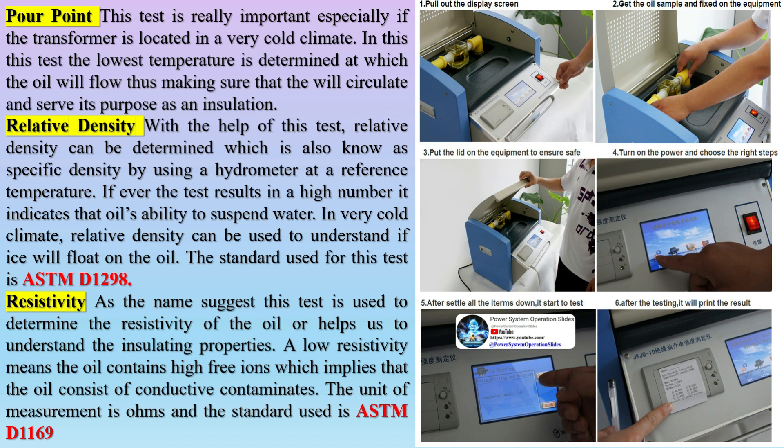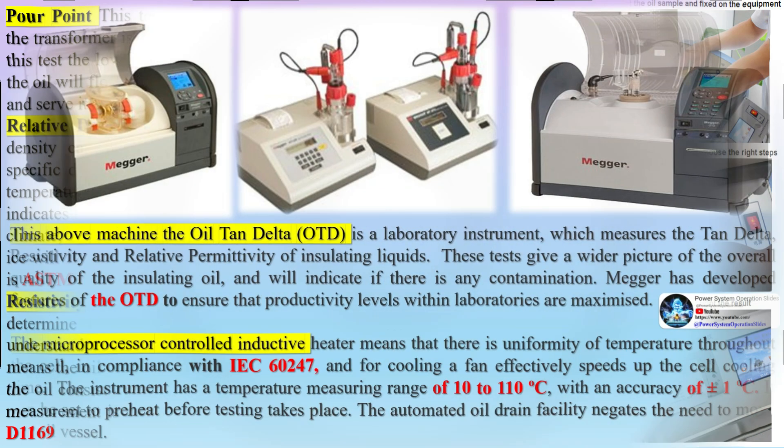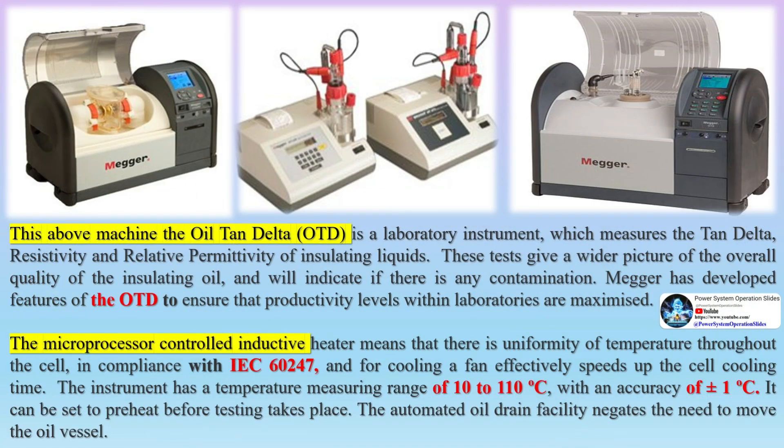Resistivity: this test is used to determine the resistivity of the oil and helps us understand its insulating properties. A low resistivity means the oil contains high free ions, implying that the oil consists of conductive contaminants. The unit of measurement is ohms and the standard used is ASTM D1169. The oil tan delta (OTD) is a laboratory instrument which measures tan delta, resistivity, and relative permittivity of insulating liquids.